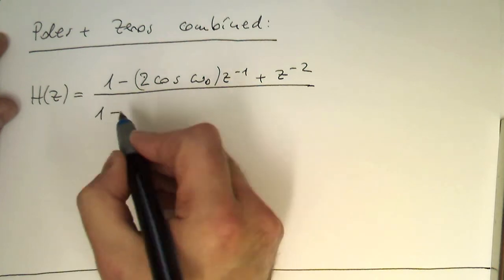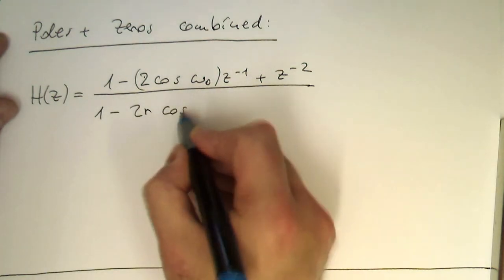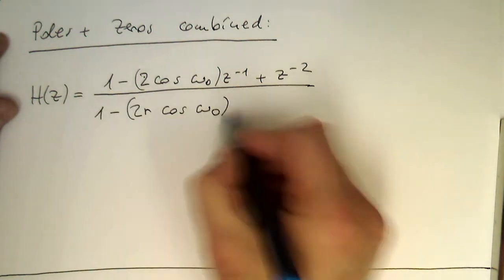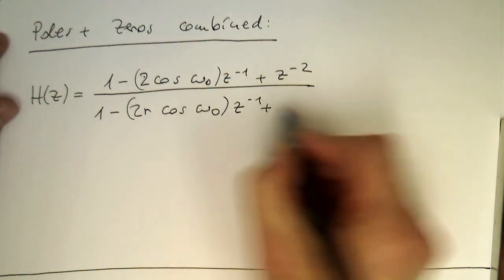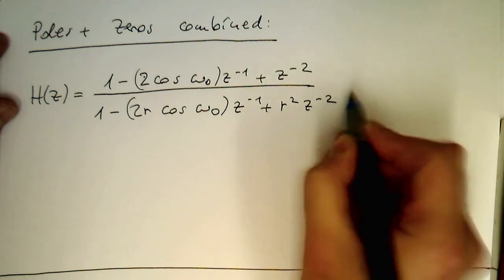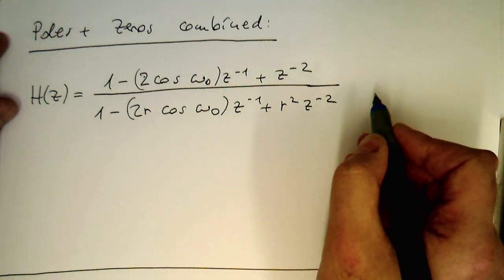And then this is one minus two r cosine omega zero z to minus one plus r square z to minus two. So this gives us a combined transfer function here.